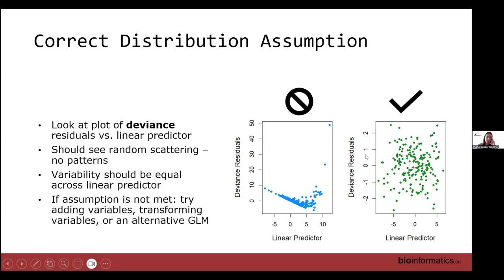If the assumption is not met, we can try adding variables to the model to explain extra variability, consider transforming predictor variables, or try alternative GLMs if another might be more appropriate.